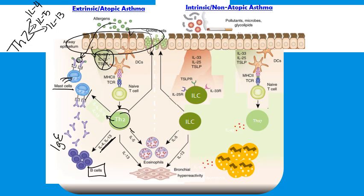IL-5 also supports the recruitment and activation of eosinophils, which can also degranulate. IL-13 leads to smooth muscle contraction, driving bronchial hyperreactivity. When mast cells and eosinophils degranulate, they release cytokines including IL-4 and IL-5, but also leukotrienes, chemokines, histamines, and prostaglandins. Specifically, LTB4 and the cysteinyl leukotrienes cause smooth muscle contraction and increase microvascular permeability and airway mucus secretion — contributing to the hallmarks of asthma: inflammation, mucus secretion, and smooth muscle contraction.